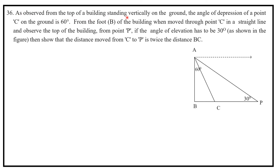As observed from the top of the building vertically on the ground, this is the building. The top of the building is point A. The angle of depression is 60 degrees, and from the foot of the building when moved through point C in a straight line and observing the building from point P, the angle of elevation is 30 degrees. Show that the distance CP is equal to twice the distance BC.